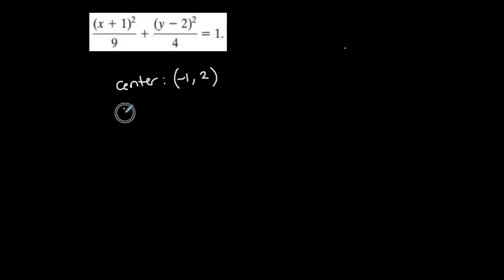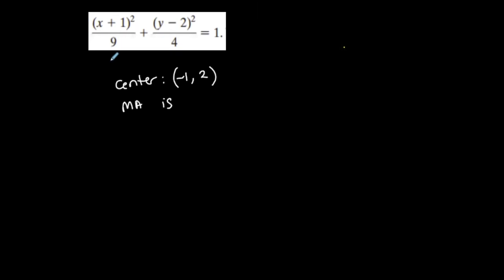What else do I want to know? Is the major axis vertical or horizontal? Well, what is the largest denominator? The largest denominator is 9, correct? And with ellipses, the largest denominator represents a squared.